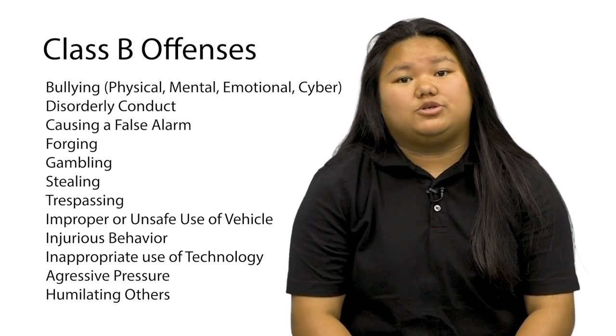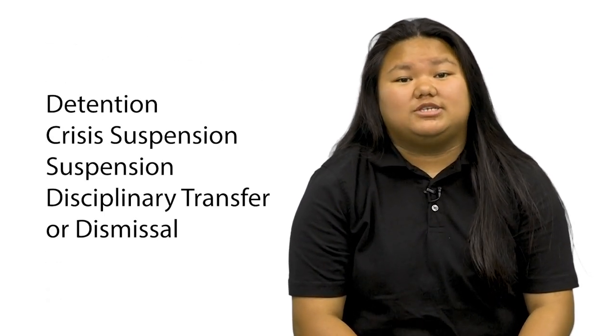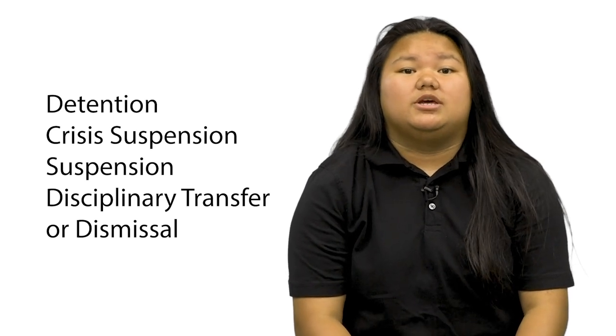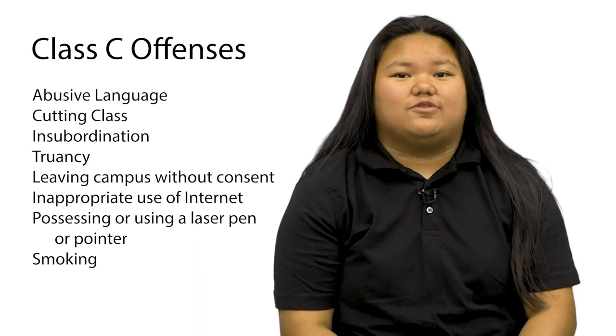Class B offenses also include aggressive pressure towards others or imposing humiliating tasks upon others. Consequences for Class B offenses include detention, crisis suspension, suspension, disciplinary transfer, or dismissal. Consequences for improper or unsafe use of vehicles on and within the proximity of campus include a suspension and police referral. Multiple offenses may result in your vehicle being banned from campus.